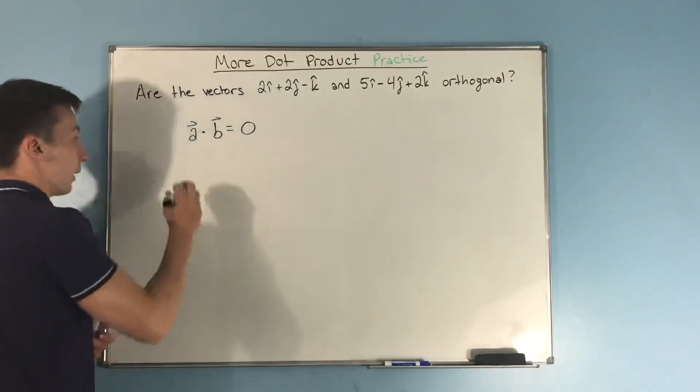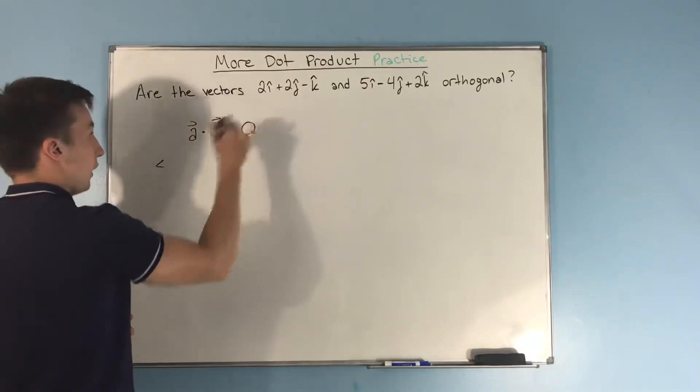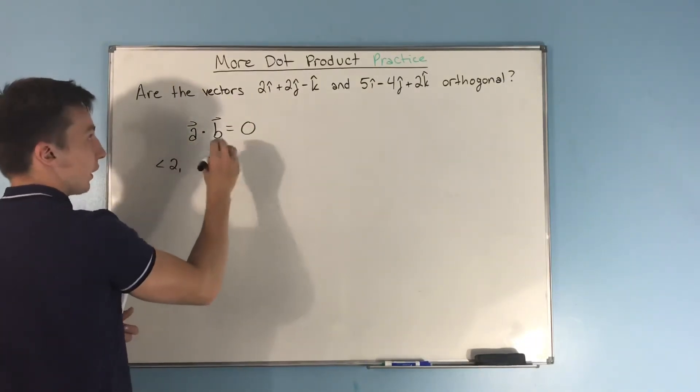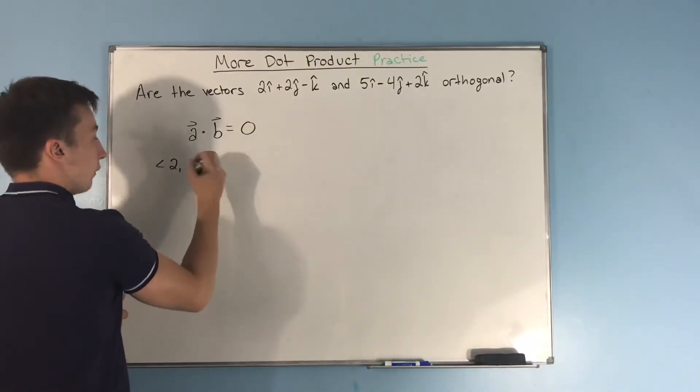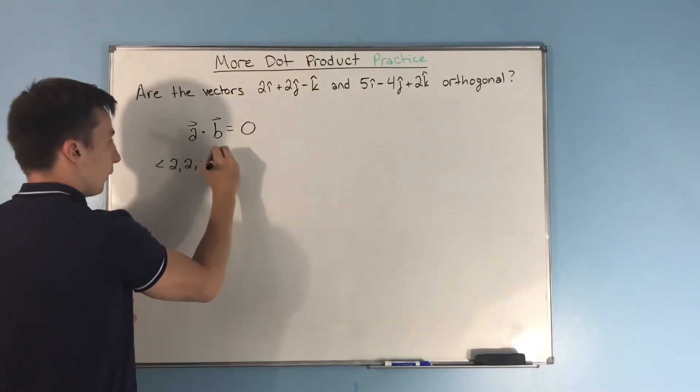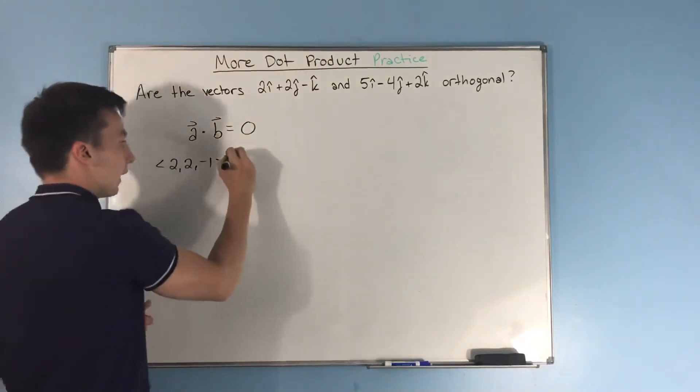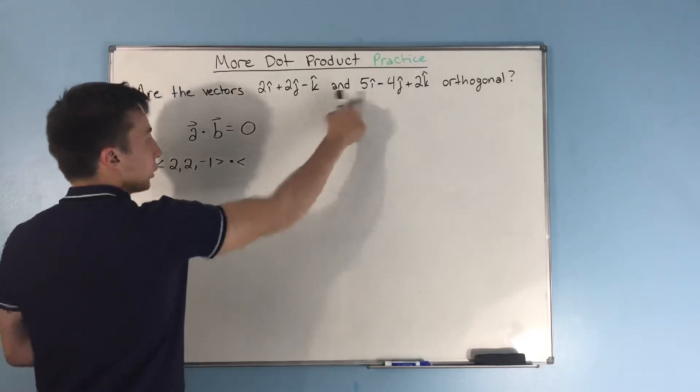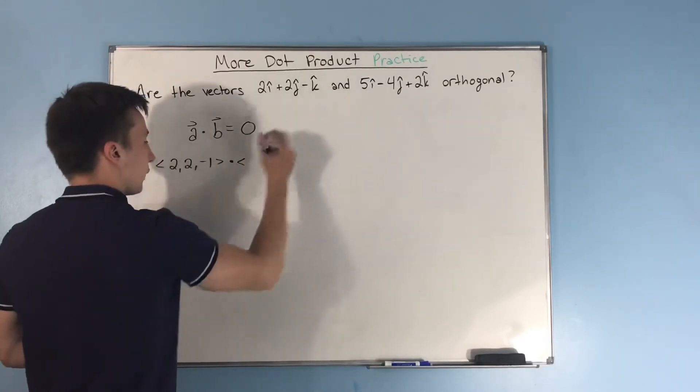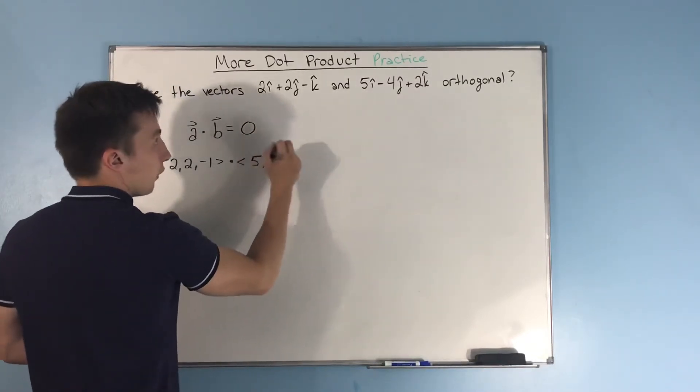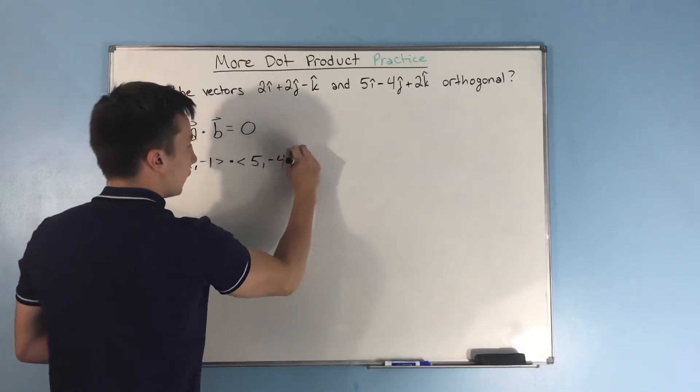Now, let's write this into angle bracket notation. Vector a, using the coefficients on i, j, and k, we have 2 comma 2 comma negative 1. We're going to dot that with vector b, which will be 5 comma negative 4 comma 2.